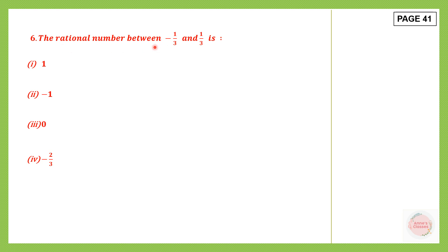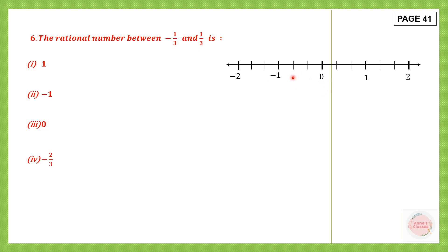Question 6: The rational number between minus 1 by 3 and 1 by 3. Let's see a number line. The denominator tells you how many parts there are. On the negative side there are 3 parts between 0 and minus 1, and on the positive side 3 parts between 0 and 1. So we have minus 1 by 3 on the left and 1 by 3 on the right. The rational number in between is 0. So option 3, which is 0, is our answer.